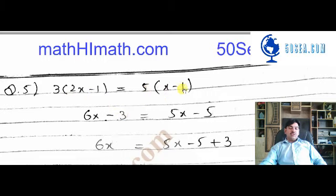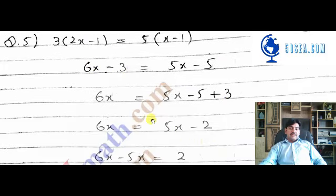Here on the right side, we also multiply by 5. When 5 is multiplied by x, we get 5x. When 5 is multiplied by minus 1, we get minus 5.